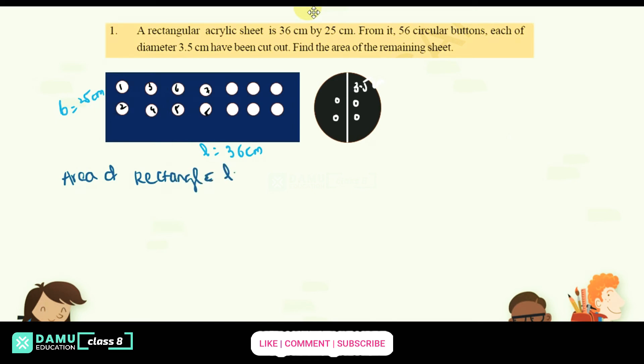So let's find area of rectangle. Area of rectangle, that is length into breadth. So what is that is area of rectangle Ar, that is length is 36 into breadth is 25. So 36 into 25, what you will get here is 900 cm square.